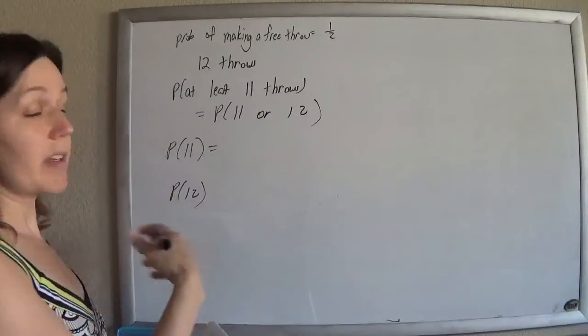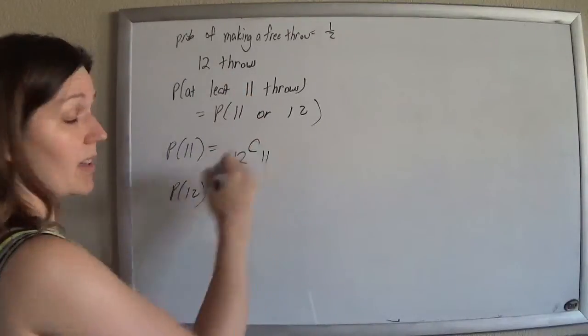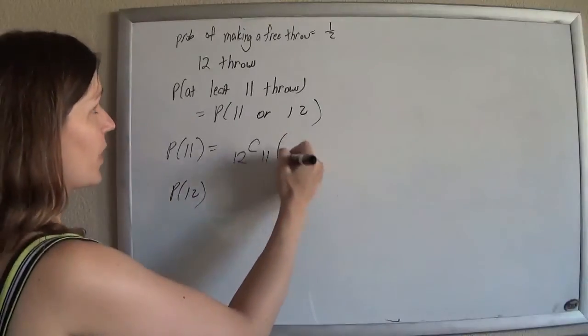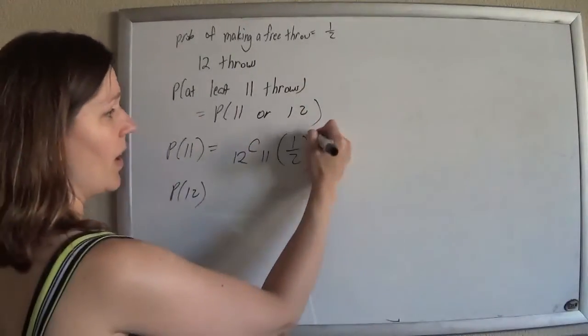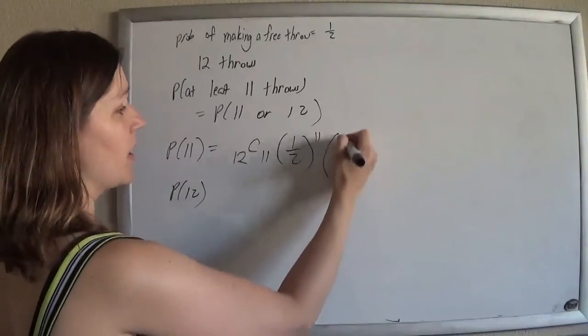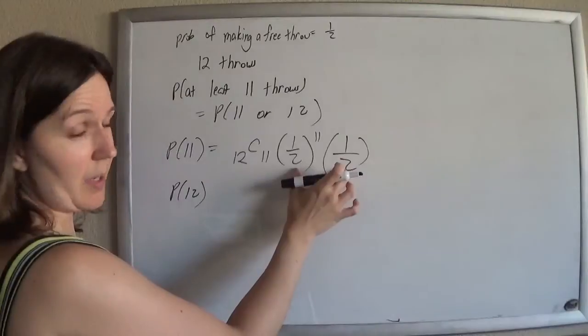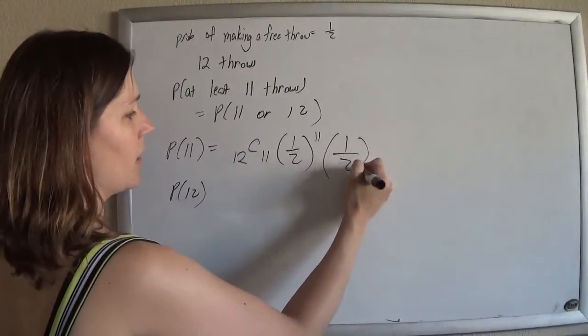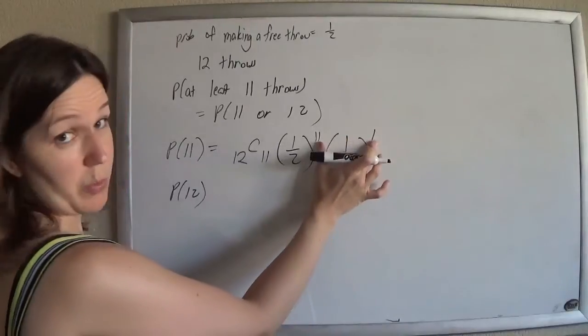So the probability of making 11 free throws is that I'm making 12 shots. I want to choose 11 out of them that I'm going to make. The probability of making it is a half. I want that to happen 11 times. The probability of not making it also happens to be a half. Those have to add up to 1, and I need that to happen once because I'm throwing 12 times.